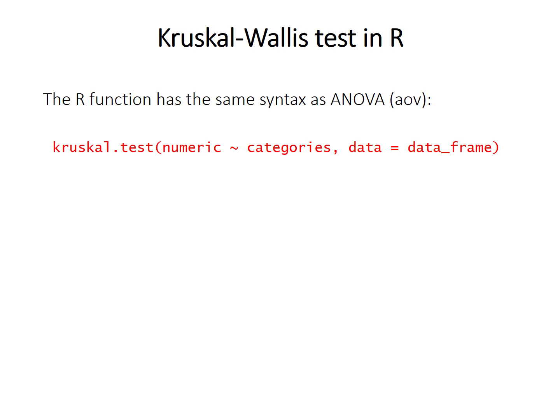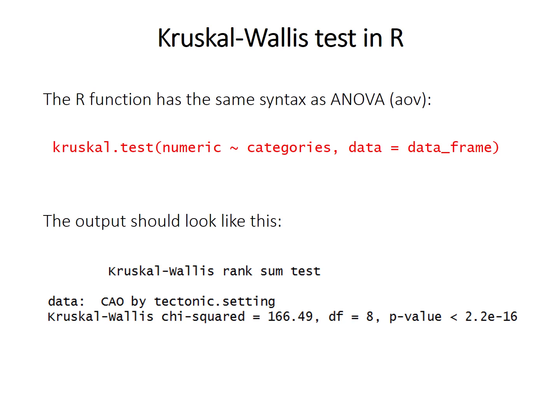The R syntax for the Kruskal-Wallis test is basically the same as ANOVA. The function is called kruskal.test, and you enter the column name containing your numeric data and the column name containing the categorical grouping factors as a formula, with the tilde symbol meaning 'as a function of.' You want to know: do the numeric data vary as a function of the category they're in? Just the column names are required; you don't need the dollar sign, because you can specify the data frame name with the data equals argument. The output gives you the H statistic (called the Kruskal-Wallis chi-squared), the degrees of freedom, and the p-value.